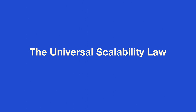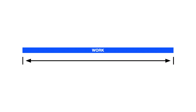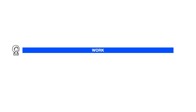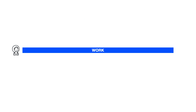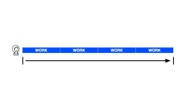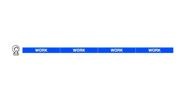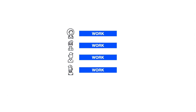We'll do that through the lens of the universal scalability law. Imagine I have an item of work — the length of this segment represents how long it will take to execute the work. Now let's add a worker. It'll take a single worker this long to finish the work. Now let's divide this work into four shards — it will still take the worker the same amount of time to accomplish the work. So if we want to go faster, one thing we can do is divide the work, and now with four workers we can complete the work in one quarter of the time.